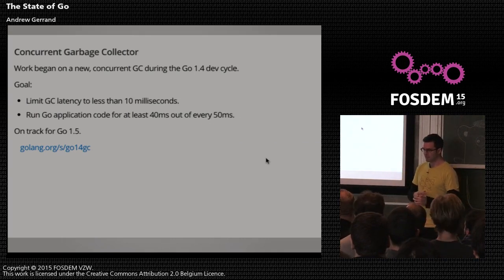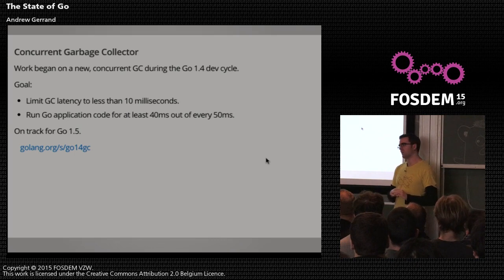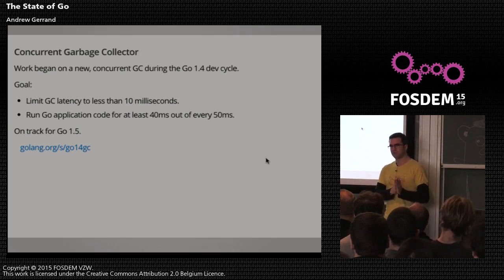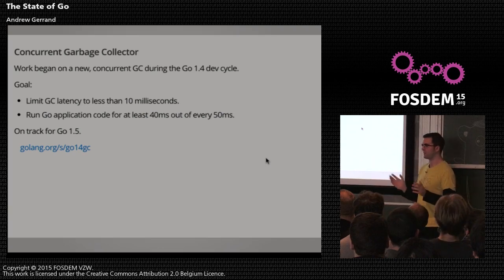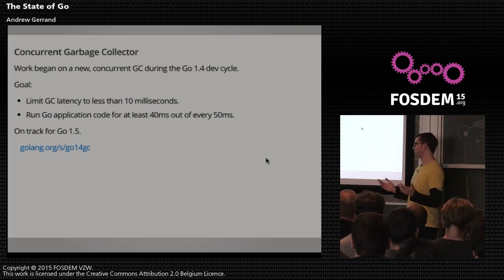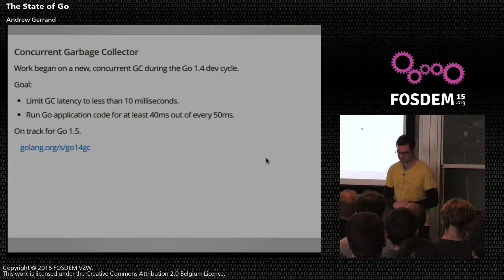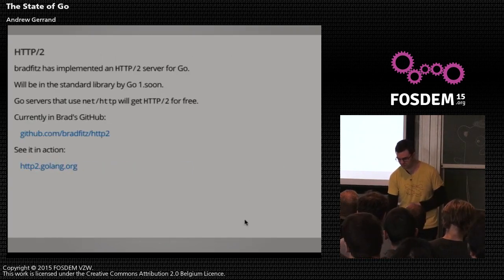Also in 1.5 we'll see a new concurrent garbage collector. The upshot is that Go programs will be guaranteed to only pause for up to 10 milliseconds on modern hardware, and your Go program will be running about 80% of the time in a guaranteed fashion — we're setting an upper bound on pauses. That'll be really nice for more interactive applications.